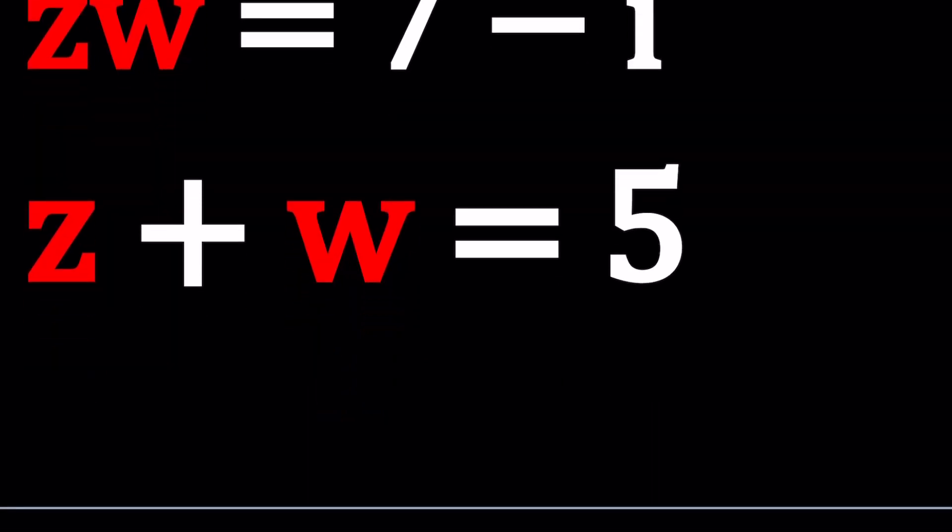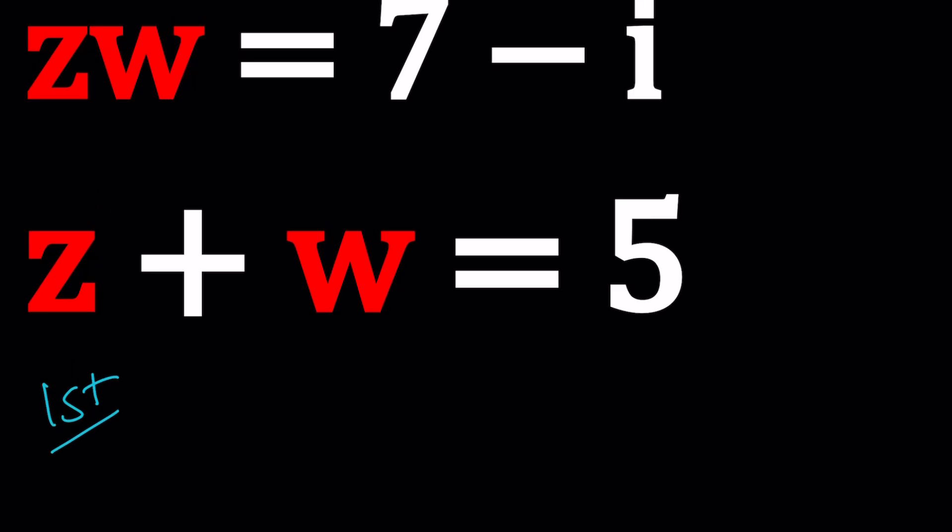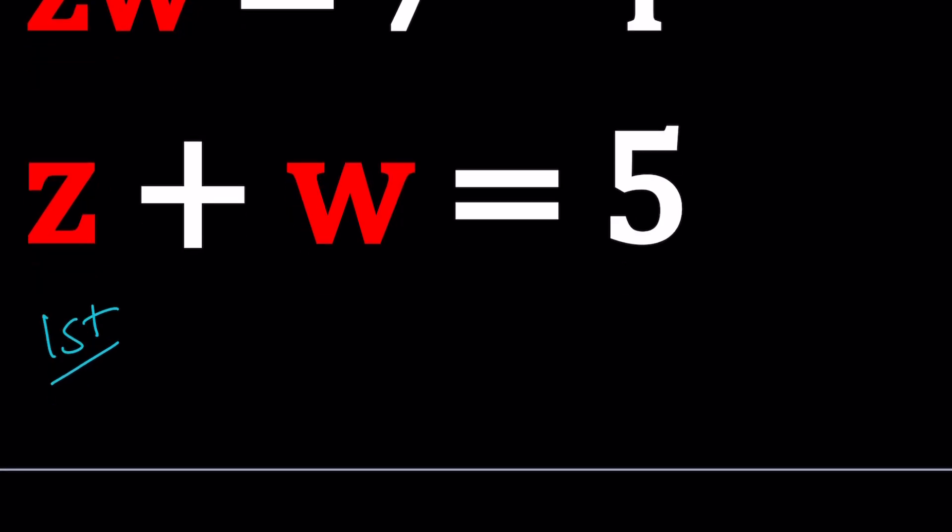First method, I'm going to use substitution for the first method. Let's go ahead and isolate W because I like the Z better. Write it as 5 minus Z and then plug it into this ZW equals 7 minus I.